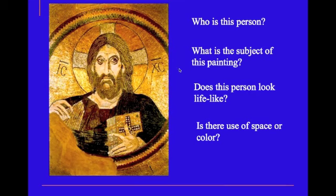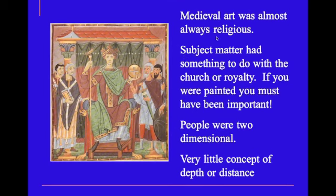Here are some questions: Who is this person? What is the subject of this painting? Does this person look lifelike? And is there a use of space or color? This is certainly not a Renaissance painting. Medieval art was almost always religious — subject matter had something to do with the church or royalty. So if you're painted, you must have been very important. People were two-dimensional, not very much sense of space. Look at his chair or throne, the columns back here, and the figure's faces are very calm, not a lot of emotion, and very little concept of depth or distance.